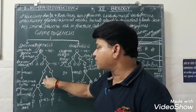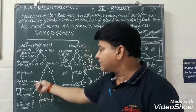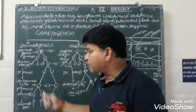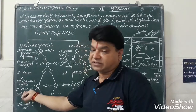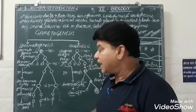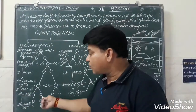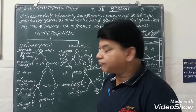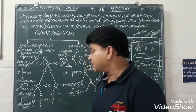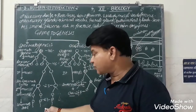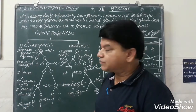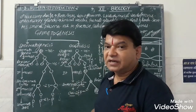After the first meiotic division, secondary spermatocytes are formed, consisting of 23 chromosomes. The secondary spermatocytes then undergo the second meiotic division, and haploid spermatids are formed. These haploid spermatids undergo spermiogenesis to form spermatozoa, that is sperm, also consisting of 23 chromosomes. FSH and LH hormones are responsible in the process of spermatogenesis.